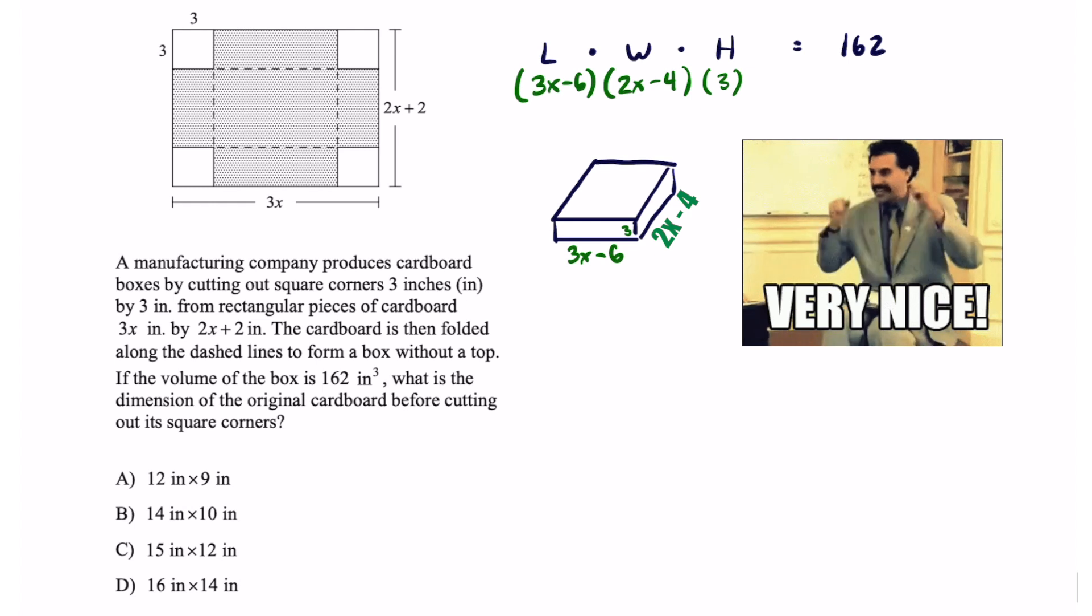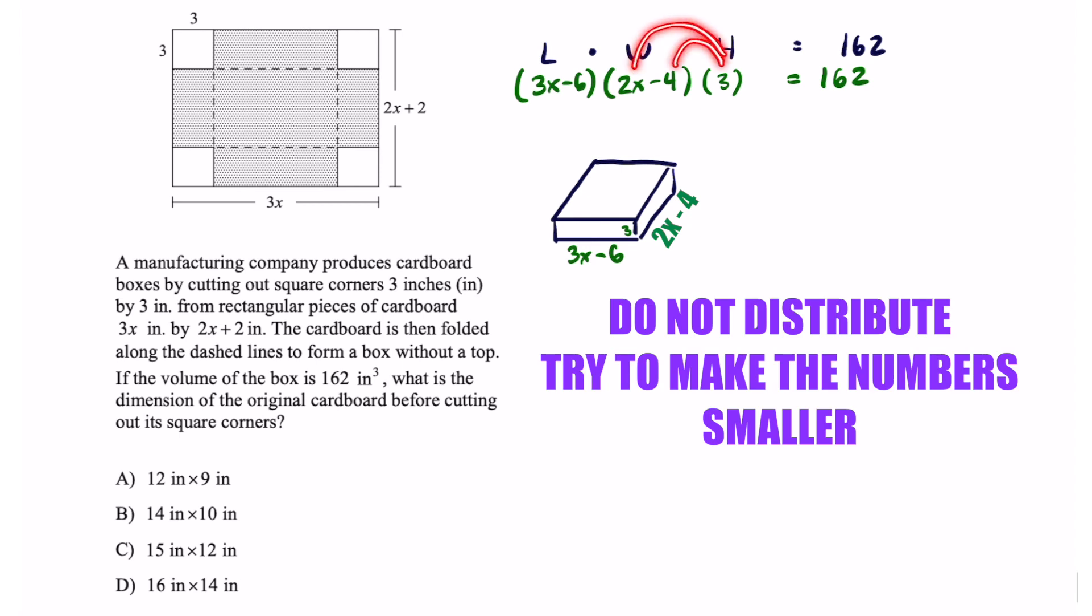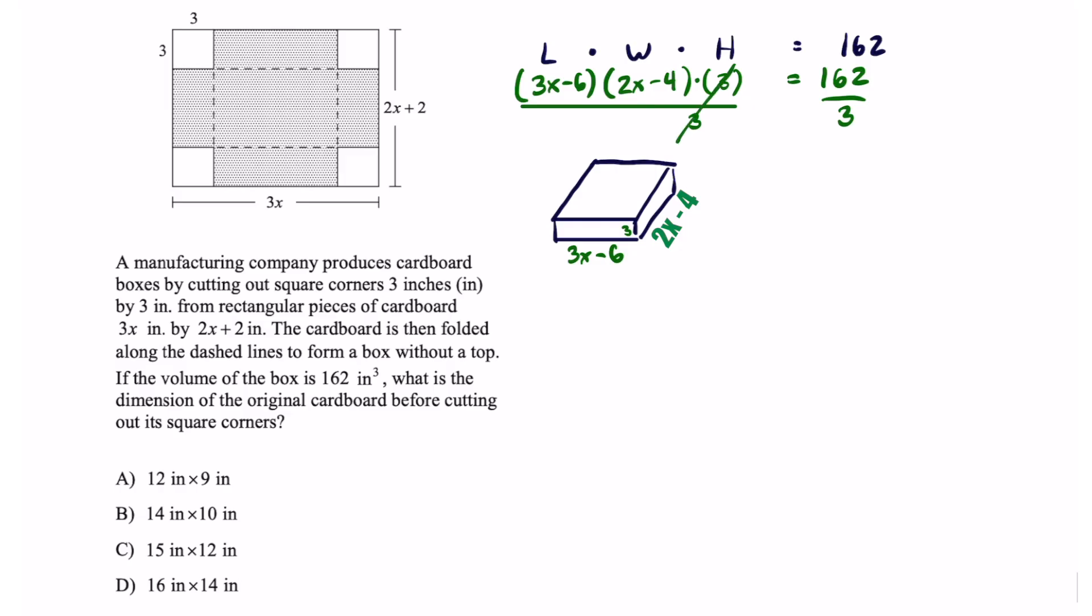Now that we got the three dimensions all of that is going to equal 162. Do not be tempted to distribute this. That's just going to make your numbers really large. So we can get rid of that right away since that's multiplication by dividing both sides by 3. That's going to cancel that out.